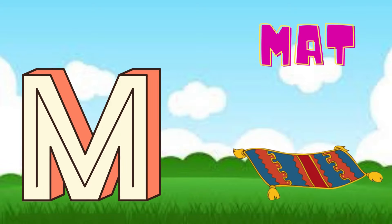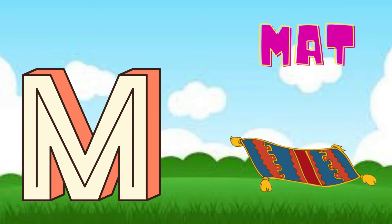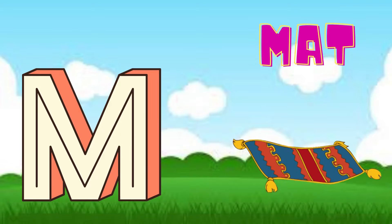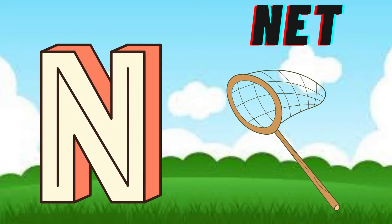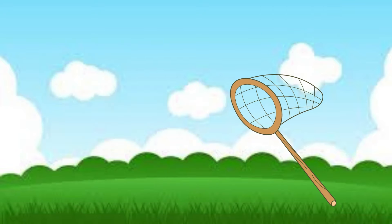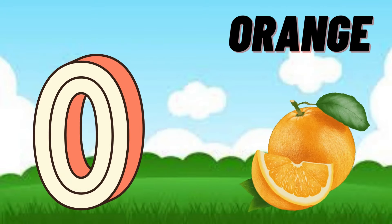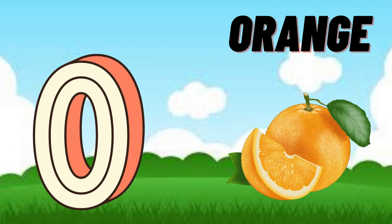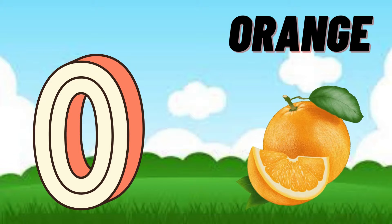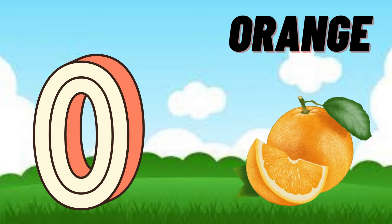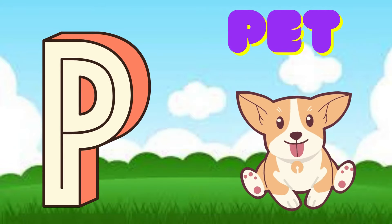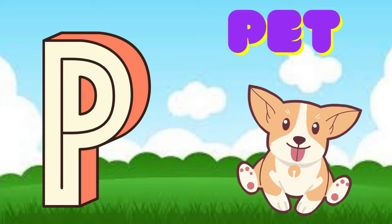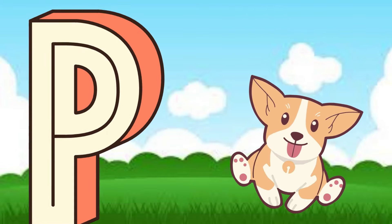M is for Mat, M-M-Mat. N is for Net, N-N-Net. O is for Orange, O-O-Orange. P is for Pet, P-P-Pet.